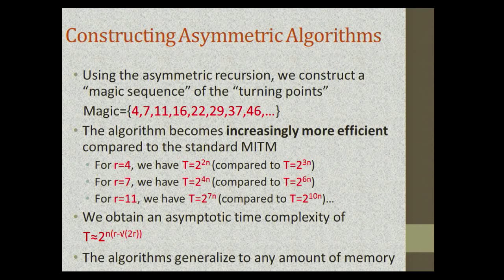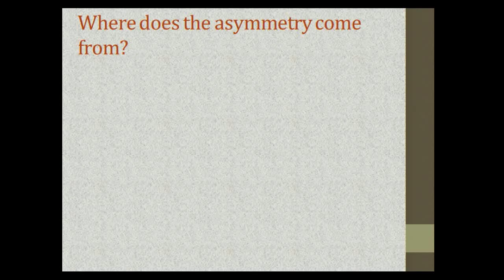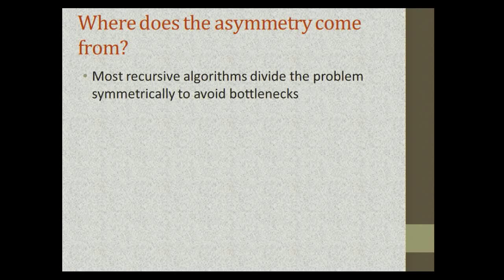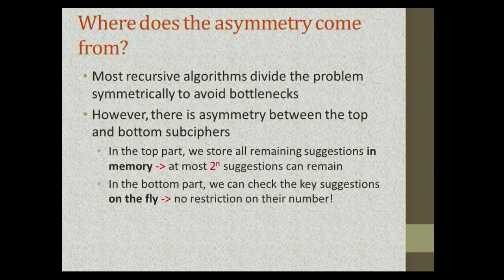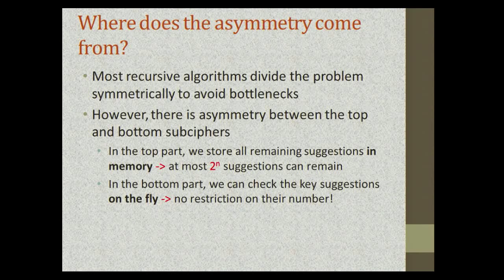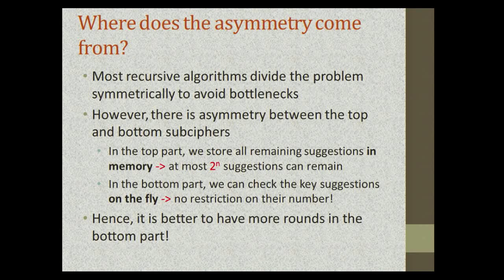The algorithm generalizes to any amount of memory. The asymmetry comes from a built-in difference between the top and bottom ciphers: in the top part we store all suggestions in memory, so at most 2^n suggestions must remain. In the bottom part we can check keys on the fly, so in terms of memory there is no restriction on their number. We pay in time since we still enumerate them, but not in memory. It is therefore better to have more rounds in the bottom part, which is why we obtain such asymmetric divisions of the cipher.